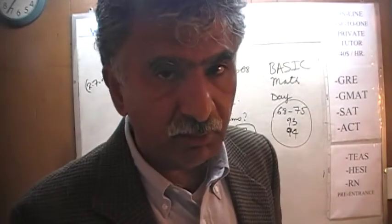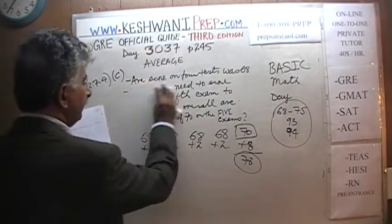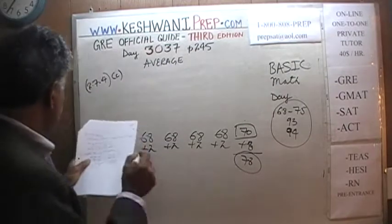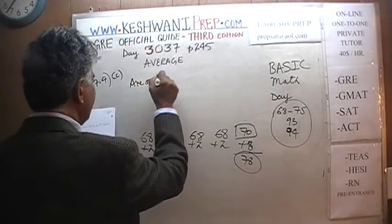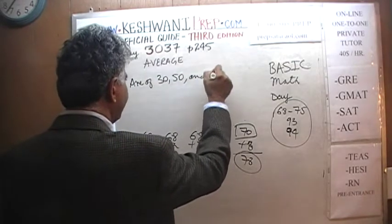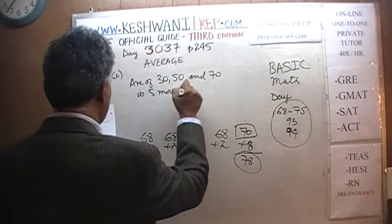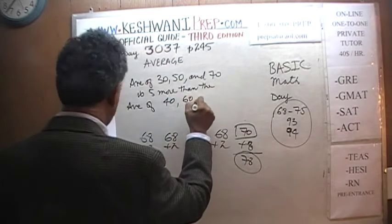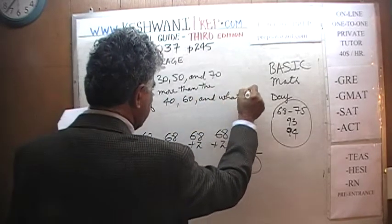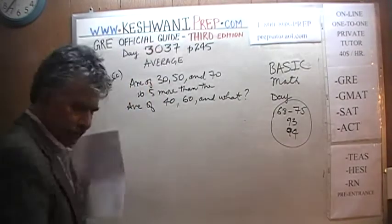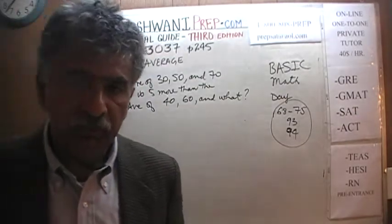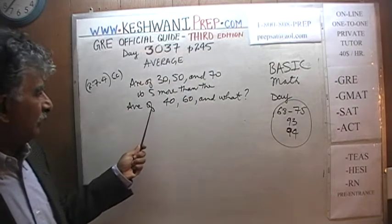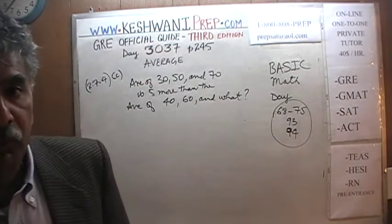Let's do one more — Part C, which was not in the book. As soon as I finish writing the problem on the blackboard, pause the video immediately and do it yourself. It says: the average of 30, 50, and 70 is five more than the average of 40, 60, and what?